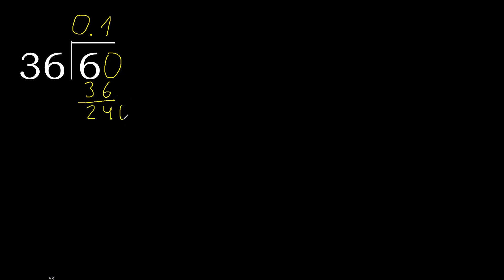There is no number, therefore complete — always complete with 0. 36 multiplied by 7 is 252, which is greater. 36 multiplied by 6 is not greater. Subtract.